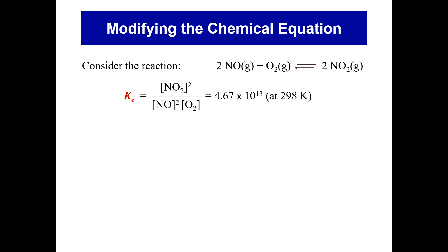We can therefore write down a Kc expression for that equation, as you can see here. It turns out experimentally that the Kc value is equal to 4.67 times 10 to the 13 at 298 Kelvin. Remember, Kc is actually dependent on temperature. Later on we're going to examine the temperature dependence of Kc and how we can predict what will happen to the Kc value if the temperature increases or decreases.